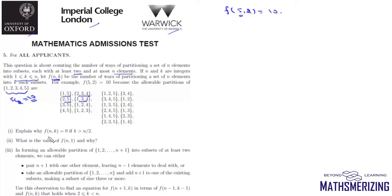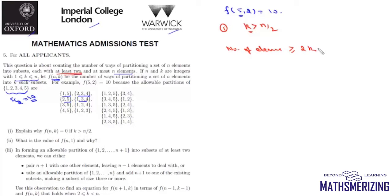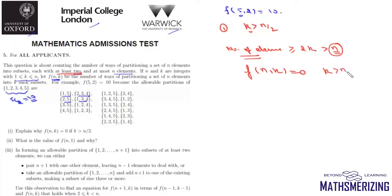The first question asks us to explain why f(n,k) equals 0 if k is greater than or equal to n/2. When k is greater than n/2, we have k subsets each with at least two elements, so the total number of elements must be greater than or equal to 2k, which is greater than n. But the number of elements in our set is exactly n, not greater than n. So this situation is not possible, and therefore f(n,k) must be 0 when k is greater than n/2.